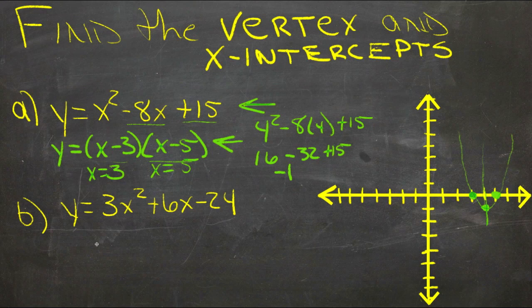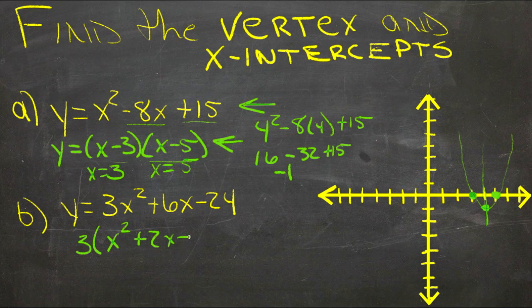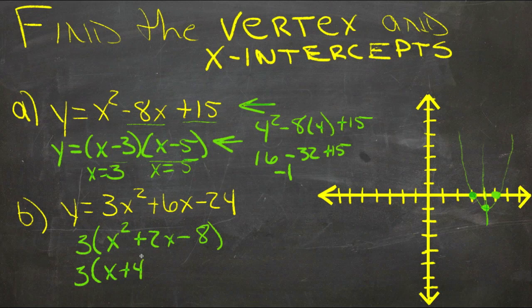And for the second one, we'll go through it just a little quicker. We'll pull the 3 out first of all, because all three of those have a 3 in them. 3 times x squared plus 2x minus 8. 8, 4 and 2, got to be a positive and a negative to multiply to be a negative. Positive 4, so our middle term is positive. So we'll get 3 times x plus 4 times x minus 2.